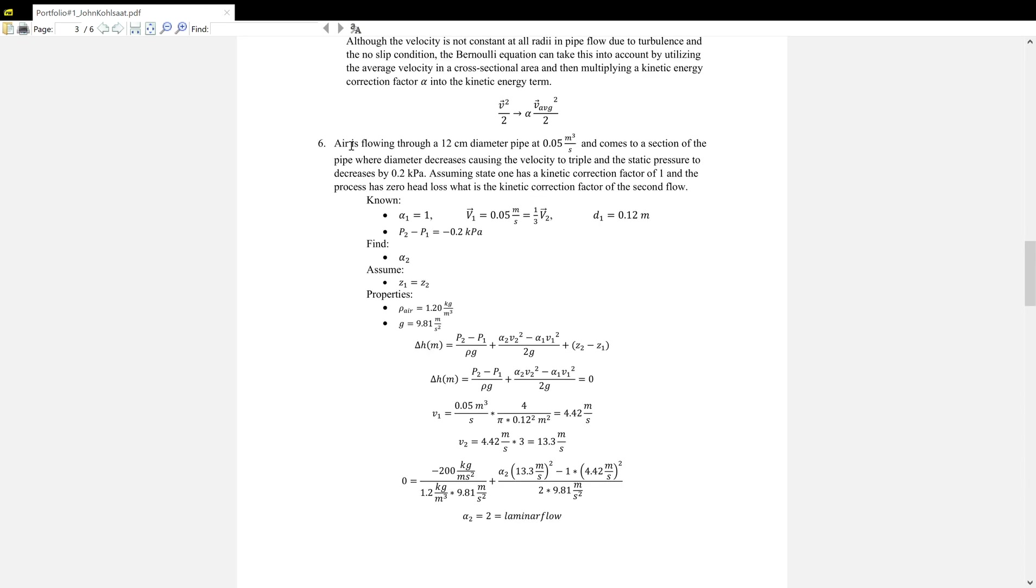Now, for question number six, air is flowing through a 12 centimeter diameter pipe at 0.05 meters cubed per second and comes to a section of the pipe where the diameter decreases, causing the velocity to triple and the static pressure to decrease by 0.2 kPa. Assuming state one has a kinetic correction factor of one and the process is zero head loss, what is the kinetic correction factor of the second state or second flow?